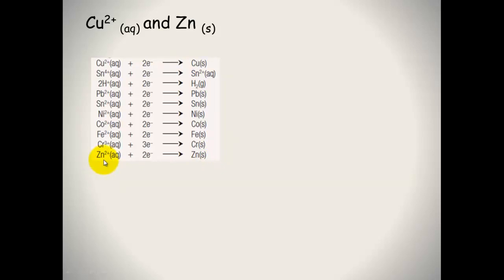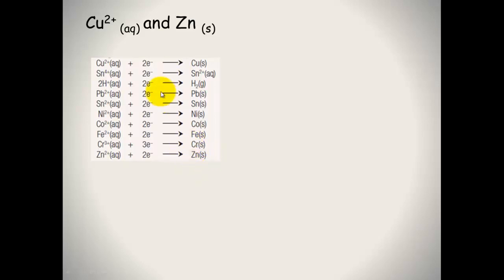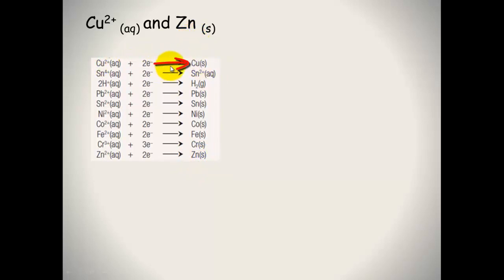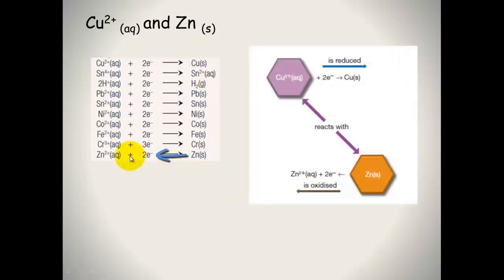The bottom row shows zinc ions plus two electrons forming zinc solid. Remember, for a reaction to occur you need something on the top left hand side of the electrochemical series reacting with something lower on the right hand side. Here we have Cu²⁺ on the upper left hand side, which can react with something on the lower right hand side — and we have zinc. So the reaction can proceed: the top one in the forward direction and the bottom reaction backwards.